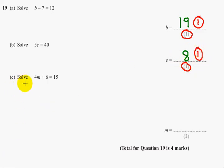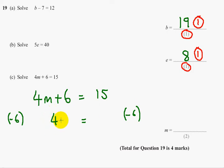Now C says solve 4M plus 6 equals 15. So 4M plus 6 equals 15. So we are going to take away 6 from both sides. And that leaves us with 4M equals 9.